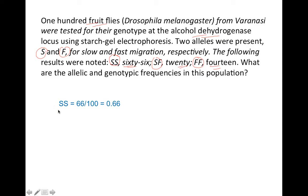What would be the genotypic frequency of SS? Number of SS individuals divided by 100, this gives us 0.66. SF would be 20 divided by 100, this comes to 0.2. FF is 14 out of 100, this comes to 0.14. This is p squared, this is 2pq, and this is q squared.